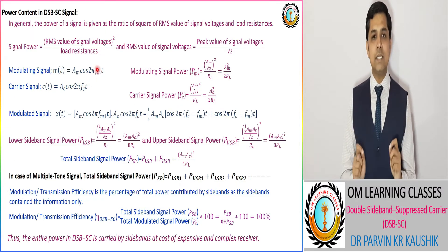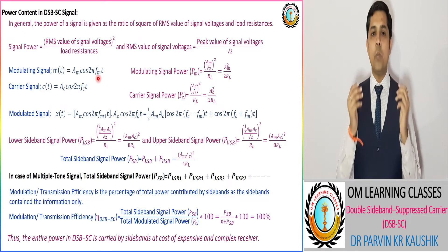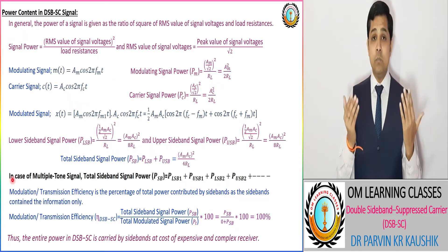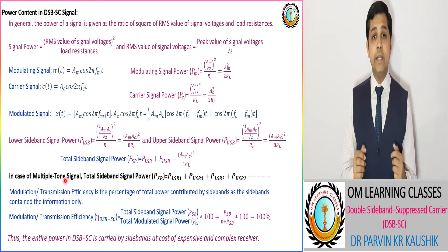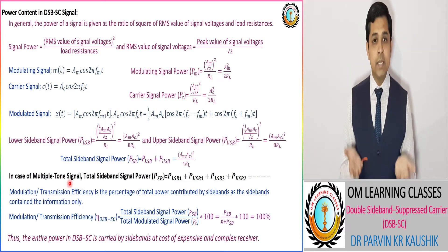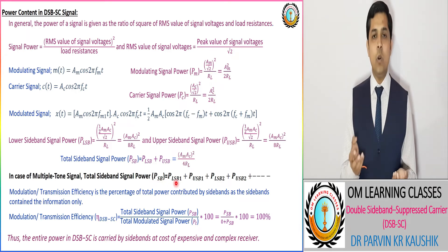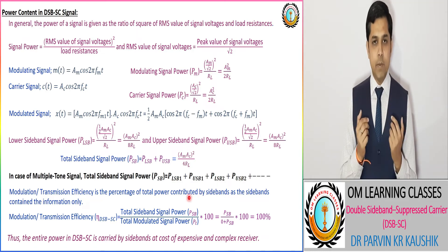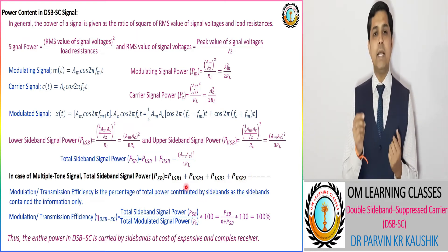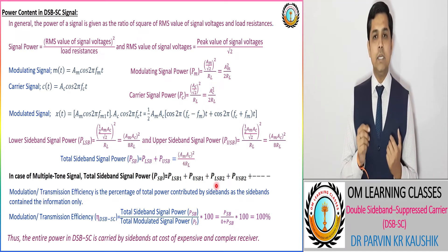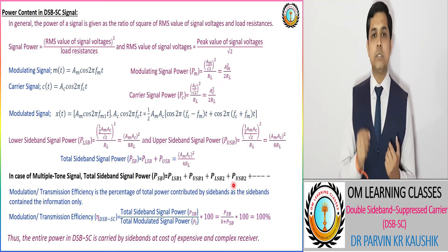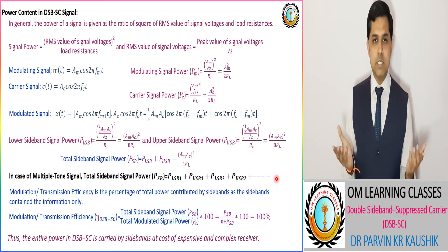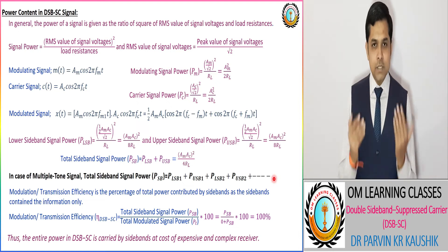If the message signal corresponds to a single operating frequency, that is a single-tone signal, the above formula applies. However, if the modulating signal corresponds to multiple signal frequencies — a multi-tone signal — then the total sideband power is the sum of all lower sideband powers plus the sum of all upper sideband powers: P_LSB1 + P_LSB2 + P_USB1 + P_USB2 and so on.